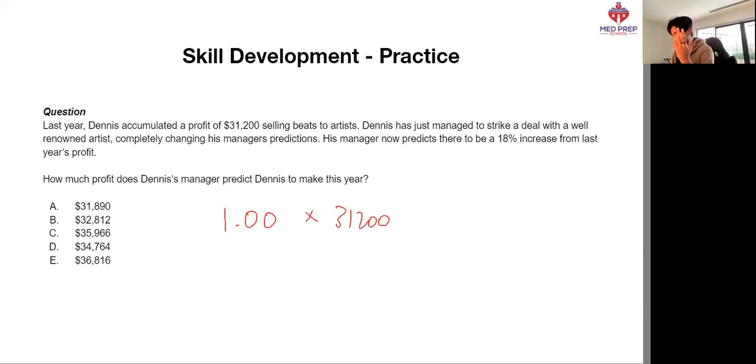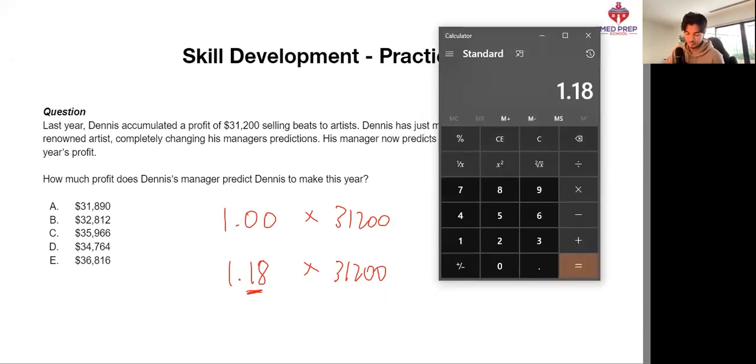Therefore, we can say that an 18% increase is actually 1.18. That's the 18% increase coming in. 31,200. So then, again, if we plug this into a calculator, 1.18 times 31,200. Easy as. 36,816. Our answer here is E.